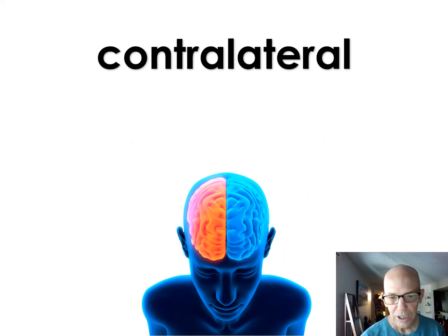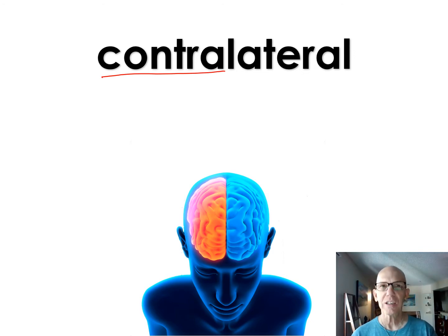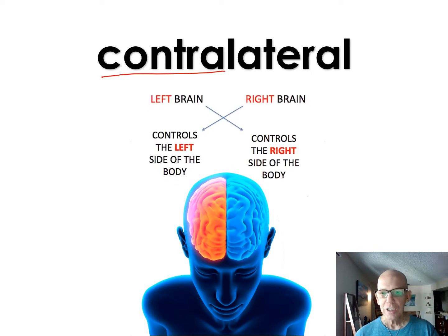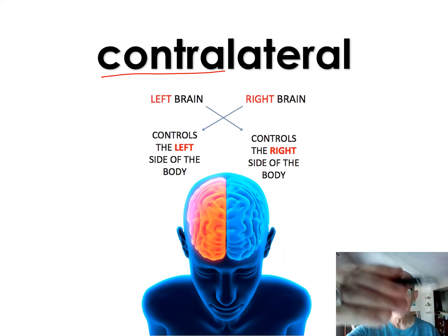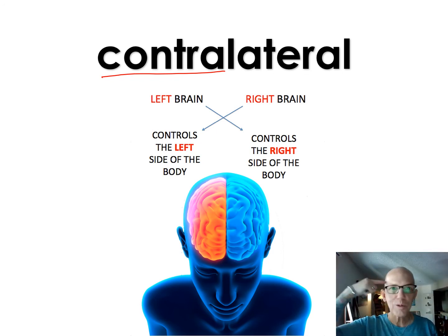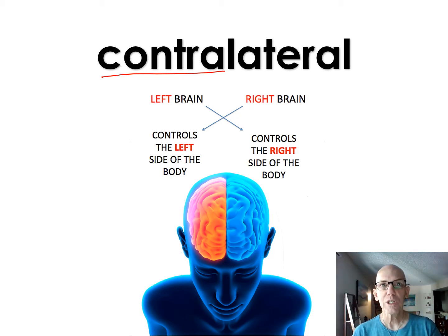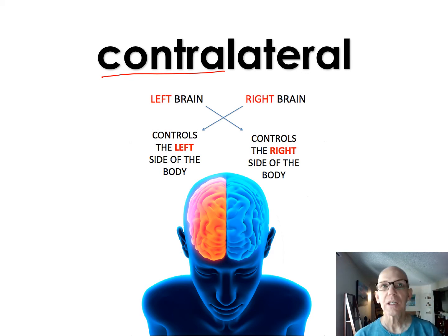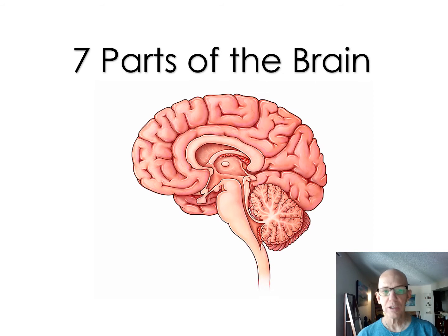One important thing about your brain is that it's contralateral — 'contra' against 'lateral' the side. That means you're cross-wired. When I raise my right hand, my left brain was doing it, and when I raise my left hand, my right brain was doing it. The right side of your body is controlled by the left side of your brain, and vice versa.